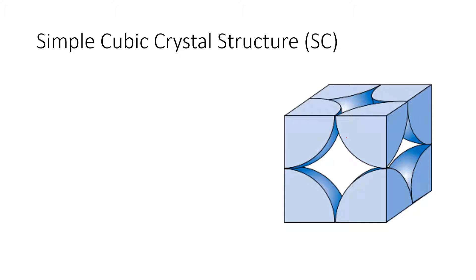So simple cubic crystal structure — they essentially have only one complete atom within the unit cell. As we can see here, this is a simple cubic structure and we have eight corner atoms, one at each corner. One of these corner atoms contributes one-eighth of an atom. So the total number of atoms in this unit cell is one-eighth times eight, which equals one.